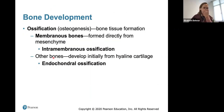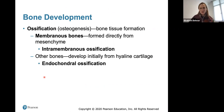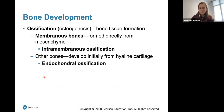Now we'll look at how bones develop — this will be important for answering your case study question. Ossification, or osteogenesis, is bone tissue formation. Membranous bones are formed directly from mesenchyme in what we call intramembranous ossification. Other bones develop initially from hyaline cartilage — that's endochondral ossification.